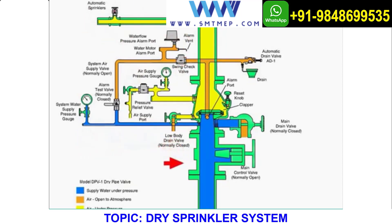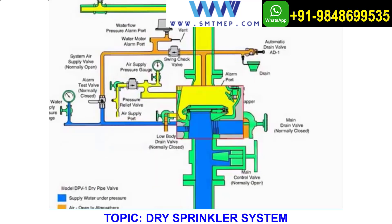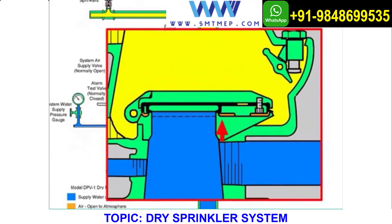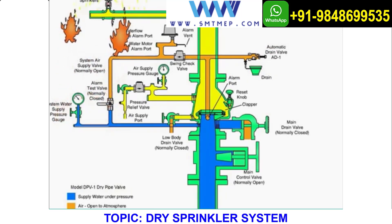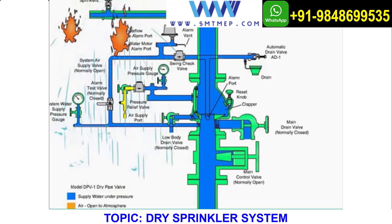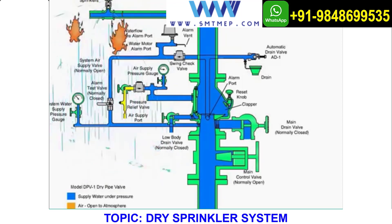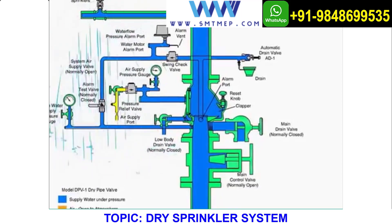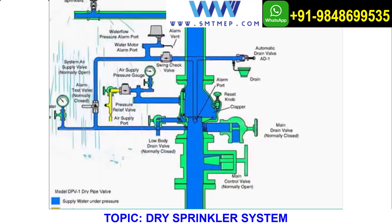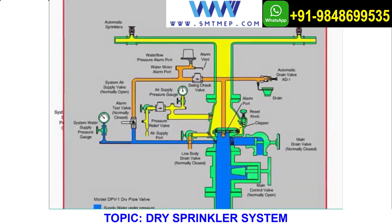The water supply contains water under pressure, shown here in blue. The area beneath the clapper is open to atmosphere through the alarm port and pipe connections to the automatic drain valve and alarm devices, shown in orange. When a fire activates a sprinkler, the air under pressure in the sprinkler piping is released and the valve opens, allowing water to spray only from activated sprinklers. Water also flows through the alarm port to the alarm devices to indicate water flow.